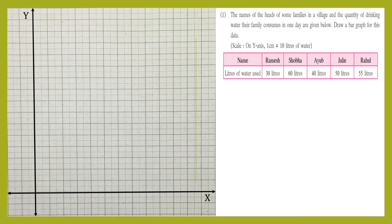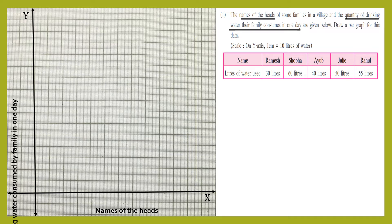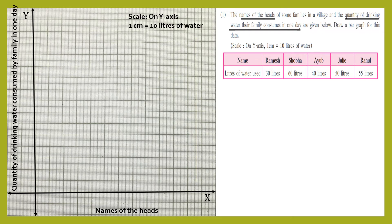When we read the question, we can see names of heads are given, so names of the heads of families will be taken on the X-axis. We'll label it 'names of the heads.' The quantity of drinking water will be taken on the Y-axis. So let's label the Y-axis 'quantity of drinking water consumed by family in one day.'